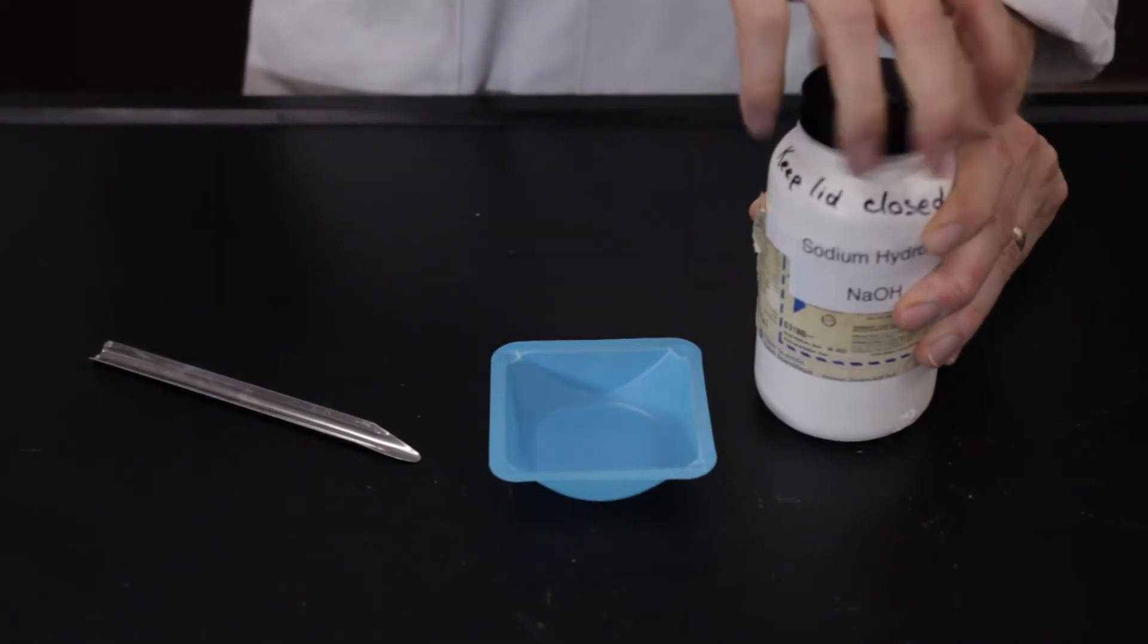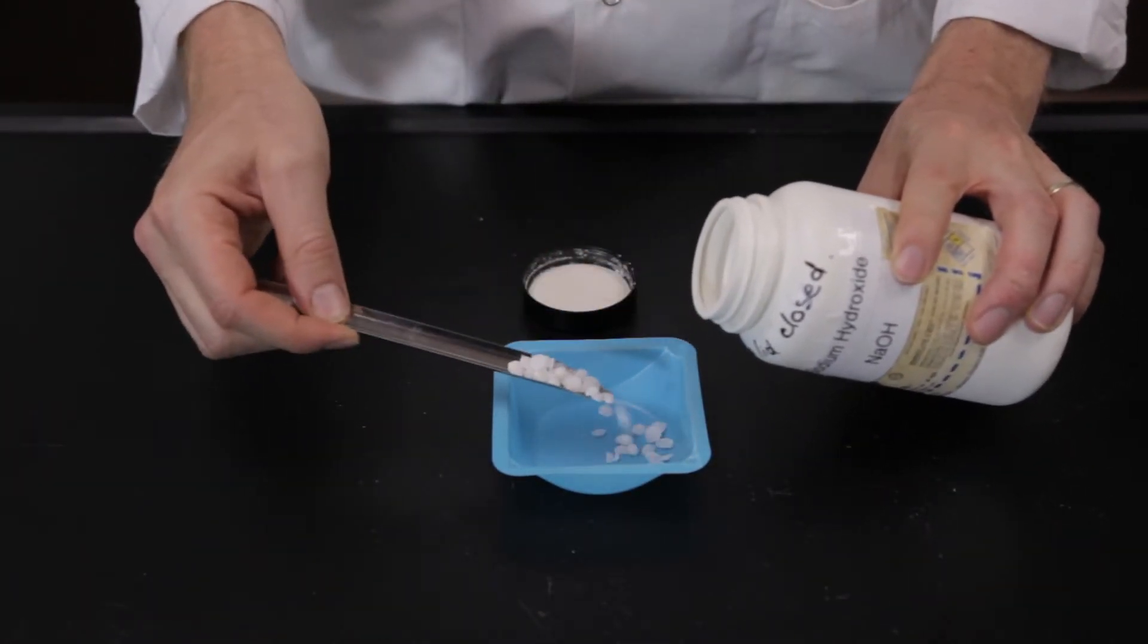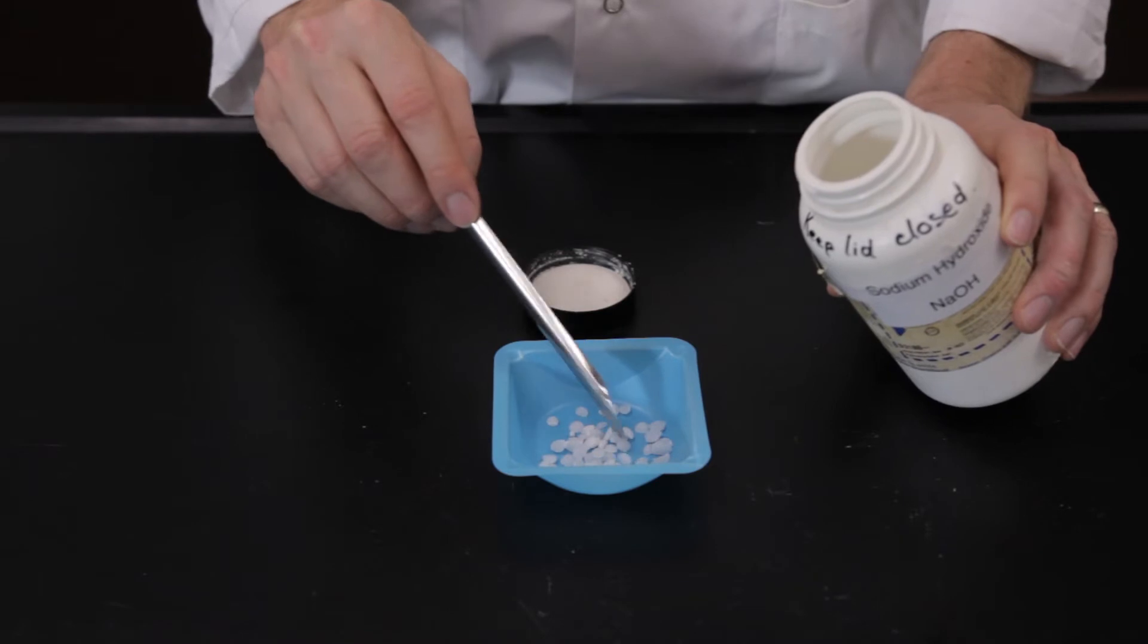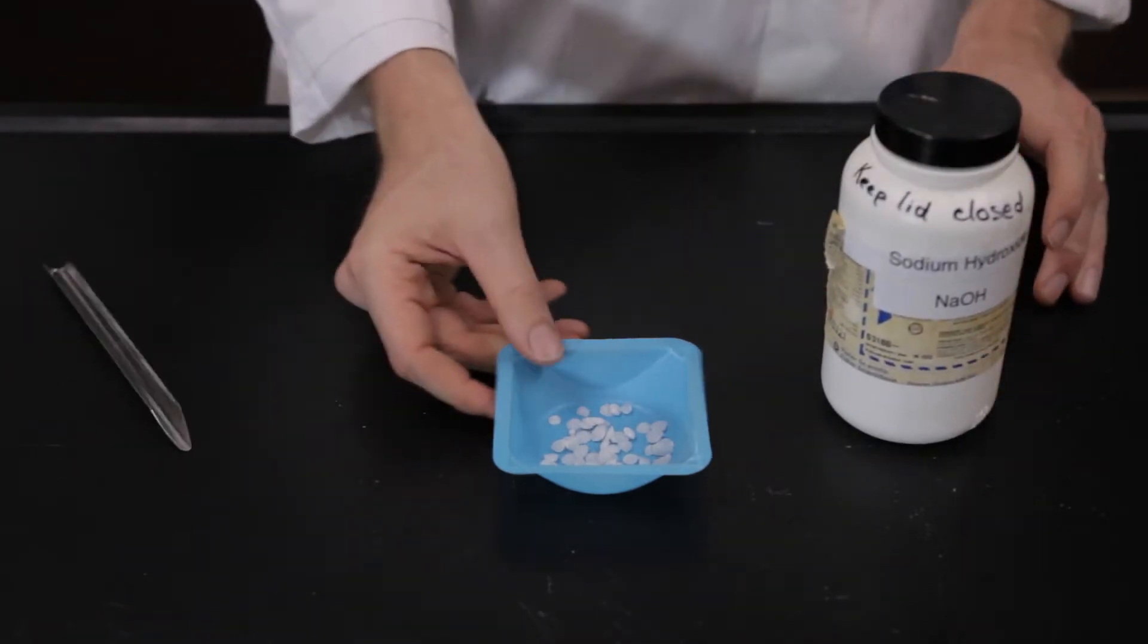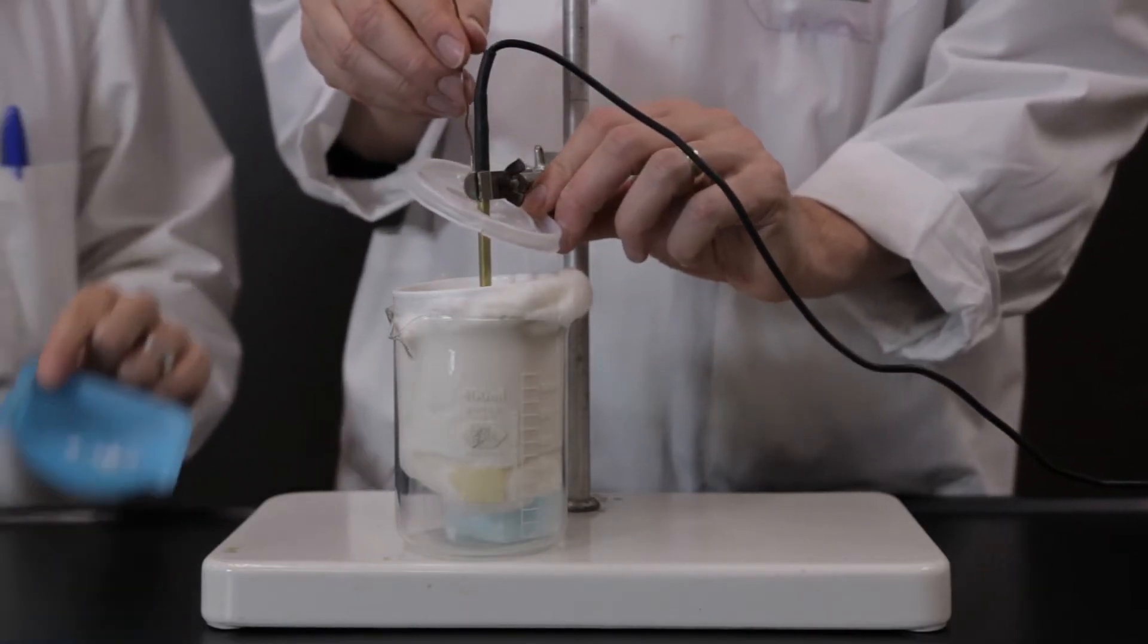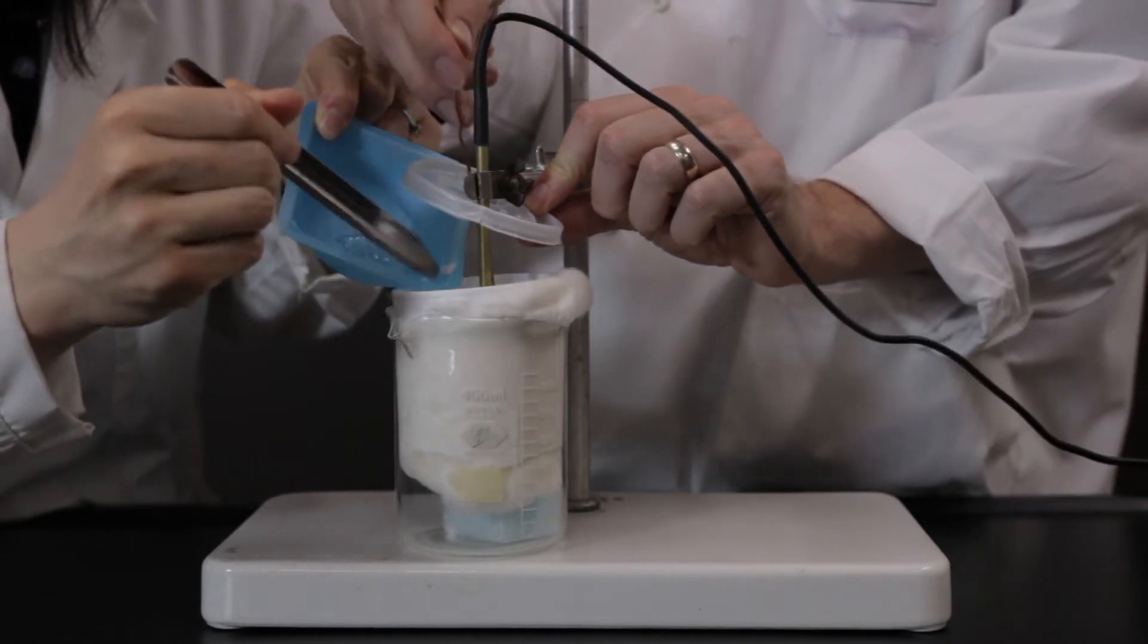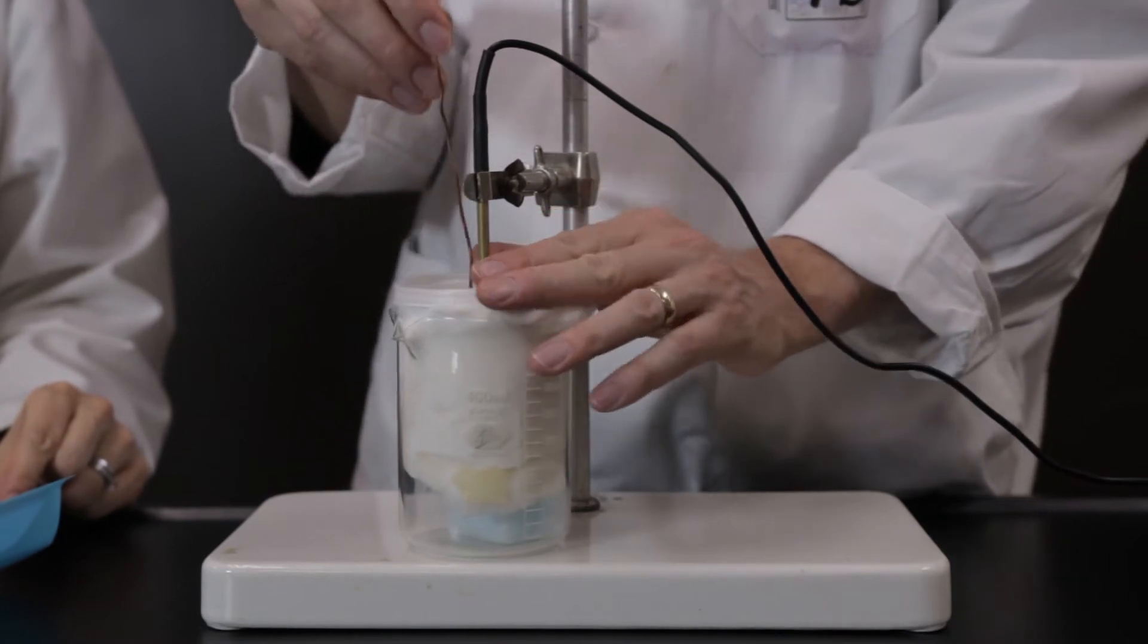Take between 35 and 40 sodium hydroxide pellets with a spatula. Add the pellets of sodium hydroxide quickly to the contents of the calorimeter, cover it, and start stirring. Continue stirring for the entire duration of the experiment.